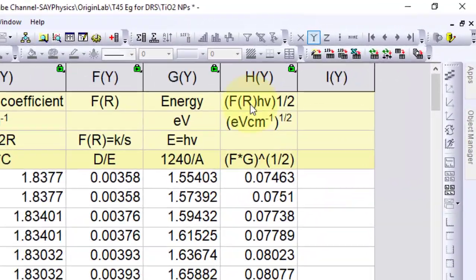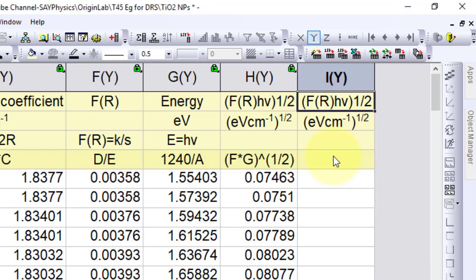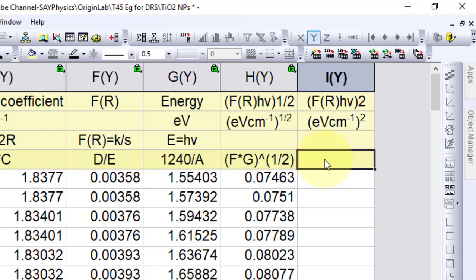Similarly, we can calculate F times energy in units of electron volt centimeter inverse with power two by multiplying column F and G with power two.